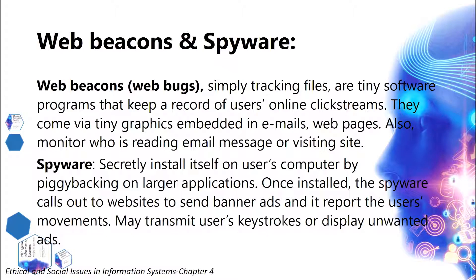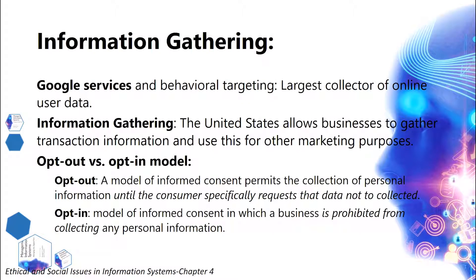Google services and behavioral targeting make Google the largest collector of online user data. Regarding information gathering, the United States allows businesses to gather transaction information and use it for other marketing purposes. There are two models of informed consent: opt-out, which permits the collection of personal information until the consumer specifically requests the data not be collected; and opt-in, a model in which a business is prohibited from collecting any personal information without prior consent.